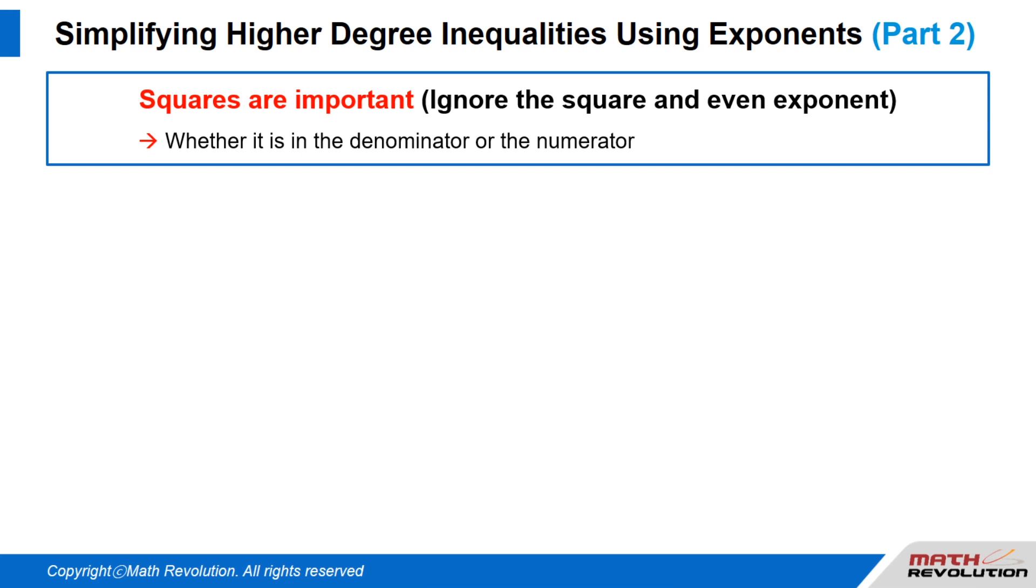We should ignore the square factor or even exponent factor whether it is in the denominator or the numerator when one side of an inequality is multiplication and the other side is zero. Ignoring the square and even exponents, only odd exponents remain. Remember this theory carefully.